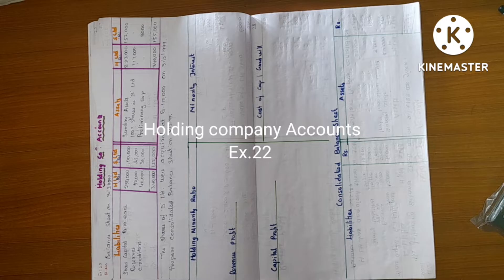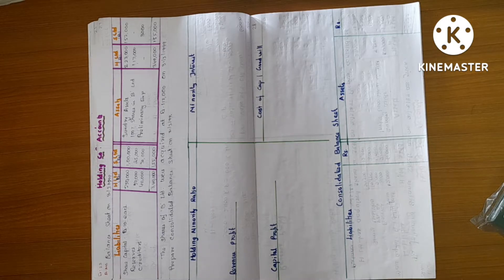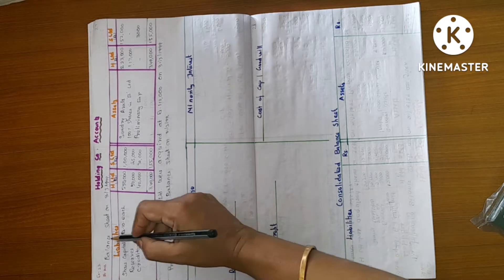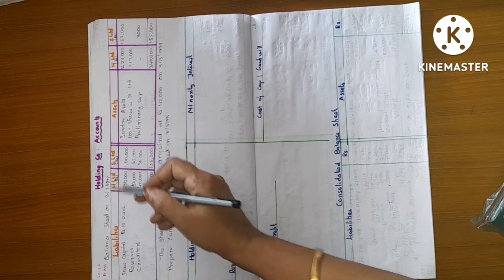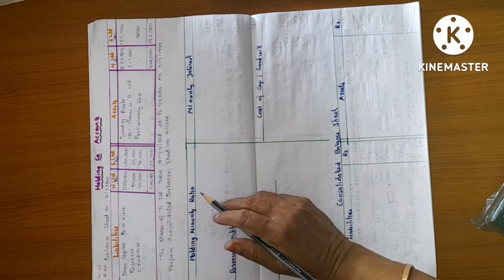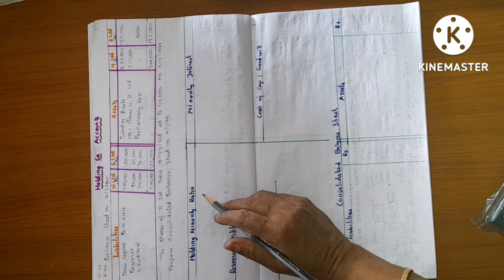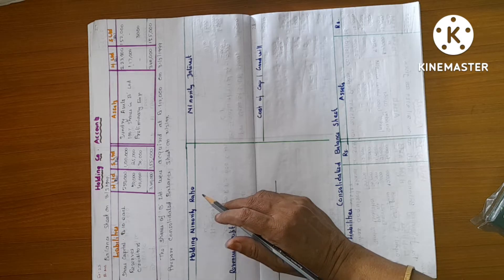Hello, ladies and gentlemen. Welcome to Ph.D. C.A. I am in a case of holding company and accounts Excise 22. Balance sheet on 30 plus 3, 1999. So, let's go to corporate accounting ready and worthy book.